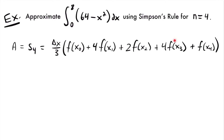Let's figure out what delta x is equal to first, which will also help us figure out what our values of x are going to be. Delta x is equal to b minus a divided by n. Here, a equals 0 and b equals 8, so we have 8 minus 0 divided by 4, which equals 2. So delta x equals 2, and we'll have 2 divided by 3 as our leading factor.